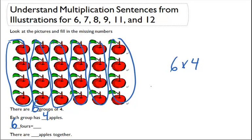So that's going to be one, two, three, four, five, six, seven, eight, nine, ten, eleven, twelve, thirteen, fourteen, fifteen, sixteen, seventeen, eighteen, nineteen, twenty, twenty-one, twenty-two, twenty-three, twenty-four. So that means there's going to be twenty-four. And in total there are twenty-four apples together. And that's the same thing as saying six times four equals twenty-four.